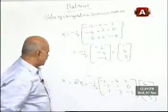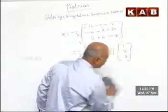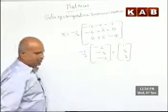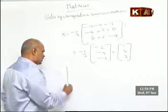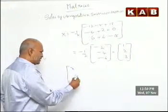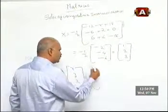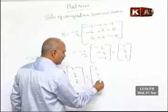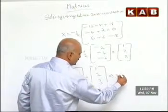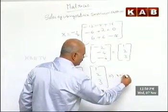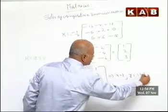Finally, you got X as 1, 2, 3. Here X already represents x, y, z. So x, y, z equals 1, 2, 3. By comparison, this implies x is 1, y is 2, z is 3.